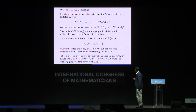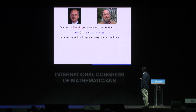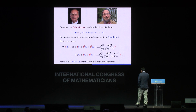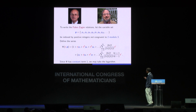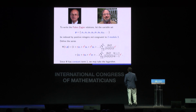To write the Faber-Zagier relations, we write down a variable set where the index should not be congruent to 2 mod 3 — we throw out 2, 5, 8, and so on. We then write down a series with the 0-mod-3 variables in one part and the 1-mod-3 variables multiplied by a certain hypergeometric series. This hypergeometric series will appear three times in this talk — this is the first time. The function has a constant term 1, so we can take its logarithm.